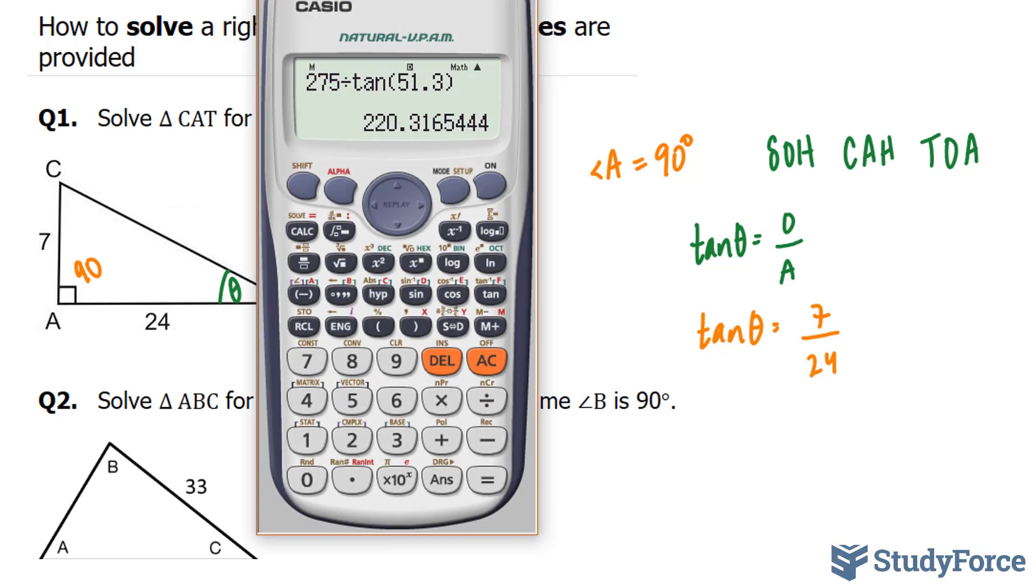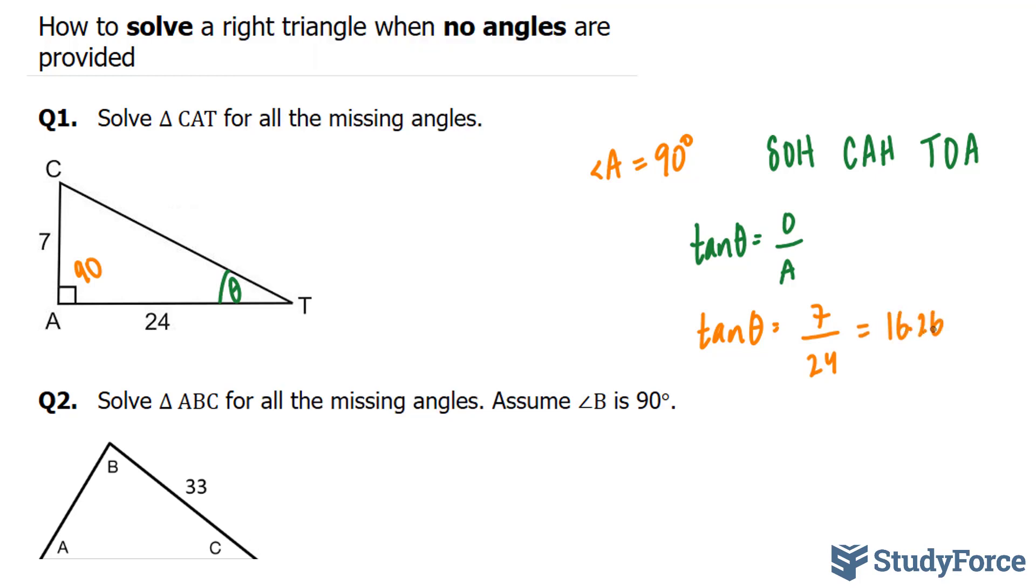And so to access the inverse tangent function, you will click Shift, tangent, and it will look like this, where you have a negative 1 as a power. 7 over 24 gives us 16.26 degrees. So angle T is equal to 16.26 degrees.